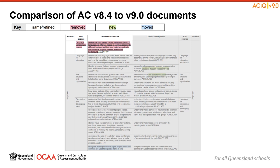If something has been removed from version 8.4 and no longer appears in version 9, it will be colour coded red. As you can see on screen, language variation and change has been removed. If there is something new that has been added to version 9 which you will not have done in version 8.4, then it will be highlighted green. In this instance, there has been the addition of across the curriculum, which has been added to identify how texts are organised differently. Finally, if a content description has moved year levels from version 8.4 to version 9, it will be highlighted blue, and there will also be a bold note to indicate what year level it has moved from or to. On screen you will note that: Recognise that capital letters signal proper nouns and commas are used to separate items in lists has been moved.